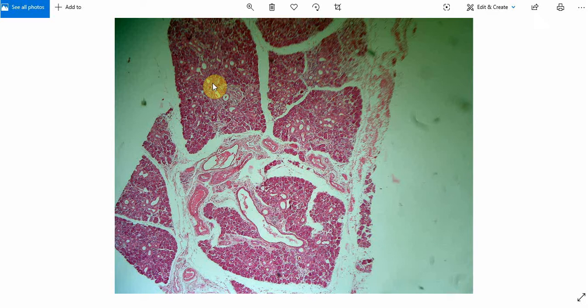You will see more number of ducts in the parotid gland, and that is not the case with the submandibular or sublingual gland. Here you can see this largest one is the main excretory duct. These are the striated ducts.